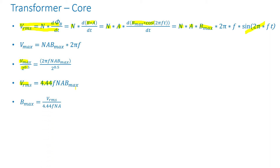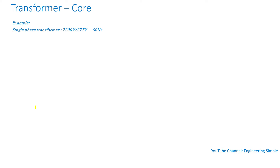Rearranging this, V_max equals V_rms divided by 4.44 times frequency times number of turns times the cross-section area of the core. This is an important equation that can be used to calculate the maximum flux density and also to calculate the cross-section area of the core.